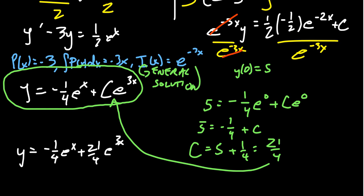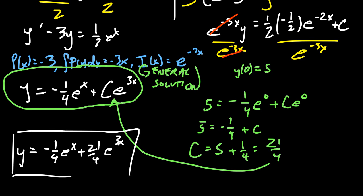We can factor out 1/4 if we want, but this is perfectly fine as the solution to our differential equation. Solving linear differential equations is pretty nice — you just use the integrating factor. It's very algorithmic; there's a process. Those six steps we saw earlier, you do them every time in that order without any deviation, and that will always solve your linear differential equations.